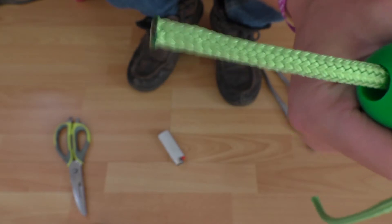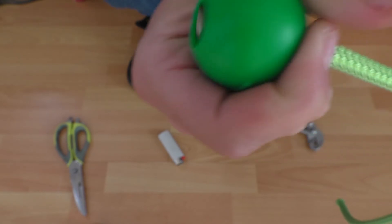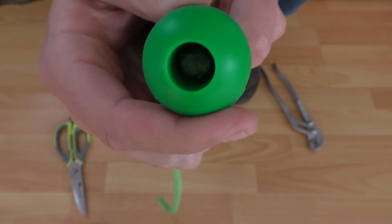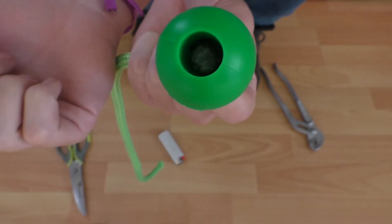Then you take the tether and you just pull up, and there you should be able to see that it's not going to pull through or anything.